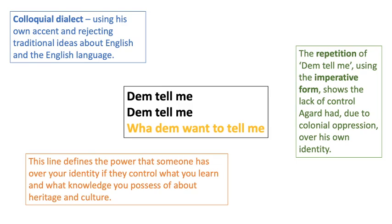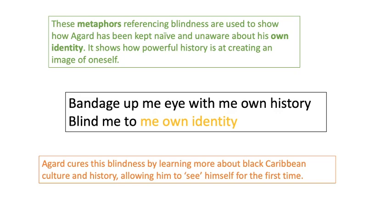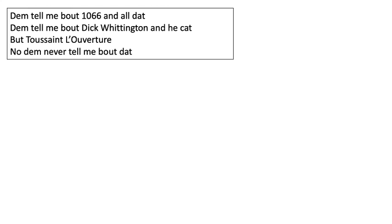Moving to the next stanza, we see Agard starting to employ metaphor to talk about the way he has been stopped from knowing himself and his own identity. Metaphors referencing blindness are used to show how Agard has been kept naive and unaware — 'bandage up my eye,' blinding him to his own identity. The idea is that through his education, he is actually becoming less knowledgeable about himself. Agard starts to try and cure this blindness by learning more about black Caribbean culture and history, which allows him to see himself for the first time. The idea of sight being created by a real perception of his history and culture is really important in this poem.